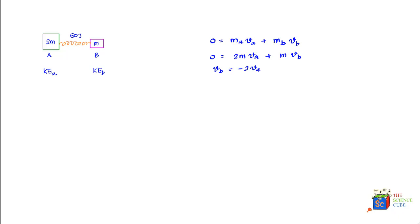Now we'll also establish the conservation of mechanical energy. The mechanical energy before masses were let go was 60 joules, which was compressed in the spring, and this should equal the kinetic energy of both the masses put together. The kinetic energy of mass A would be half into m, which is 2m, into va^2.